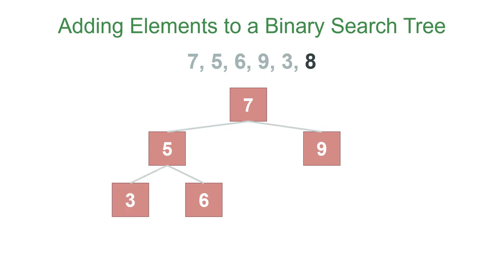And then finally, we add 8. 8 is larger than 7, so it goes in its right subtree, but it's smaller than 9, so it goes in 9's left subtree. So now we've completed our binary search tree.